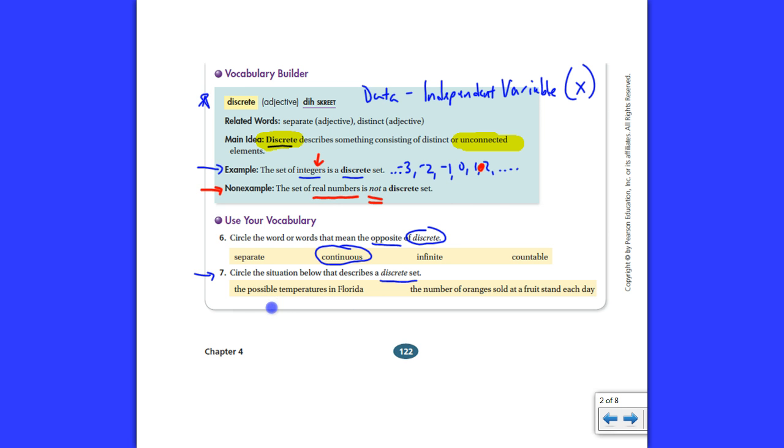For example, this says circle the situation that describes the discrete set. Well, the possible temperatures in Florida. Consider this. Consider if you were graphing the temperatures. And these were temperatures. And is it possible that if you're graphing temperatures that you can have, let's say that's 10 and that's 20. Could you have a value in between 10 and 20, like 10.5?